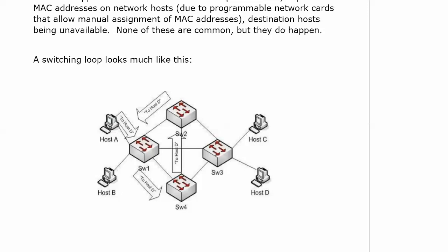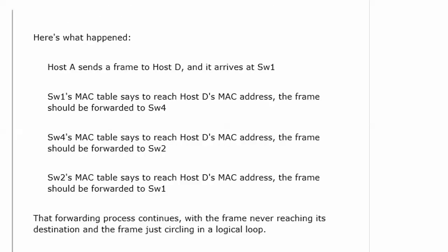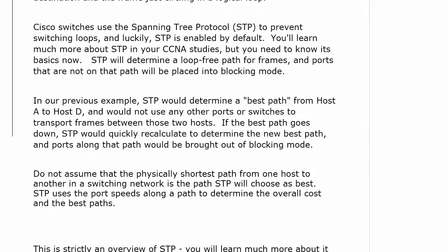A switching loop looks like this: Host A sends a frame for Host D. Switch 1 gets it and says the best next switch is Switch 4 — that'll get it closer to its destination. Switch 4 looks in its MAC address table and says we should send this up to Switch 2. Switch 2 gets the frame, looks in its MAC table, and says the best place to send this is to Switch 1. And the process just continues and continues. The frame never gets to its destination. That is why we have the Spanning Tree Protocol.